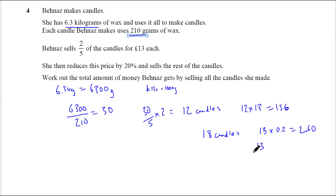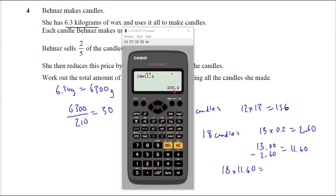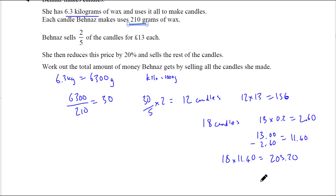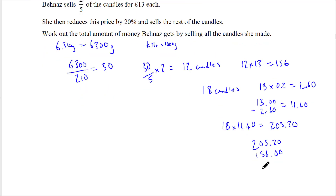She then reduces the price by 20% and sells the rest. There are 12 candles sold at £13, and 3 fifths is 18 candles left. It's £13 reduced by 20%: 20% of £13 equals £2.60, so the reduced price is £11.40. The next sum is 18 times £11.40, which is £205.20. This could quite easily appear on a non-calculator paper because none of the figures are too hard to work out.